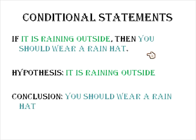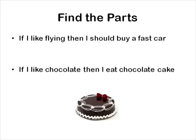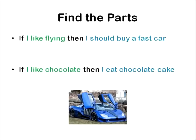That's pretty much the basics. So let's go ahead and find the parts. Here are some silly sentences just to prove that it doesn't really matter what the hypothesis and conclusion are — we just want to get a basic idea. If I like flying, then I should buy a fast car. If I like chocolate, then I eat chocolate cake. Pause the video and try to find where the hypothesis and conclusion are in both of those statements. Here are the answers: hypothesis — 'I like flying,' conclusion — 'I should buy a fast car.' Hypothesis — 'I like chocolate,' conclusion — 'I eat chocolate cake.'